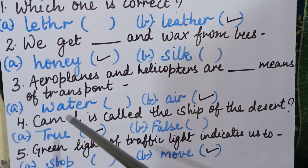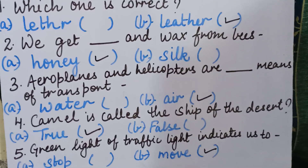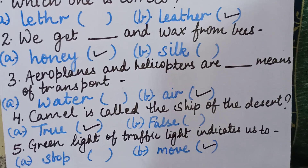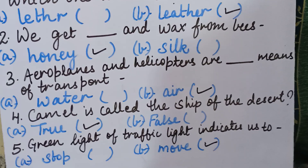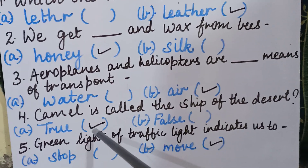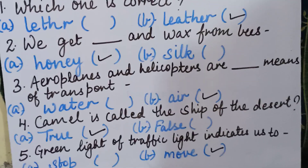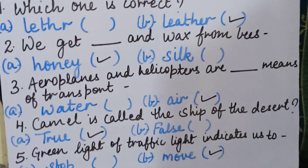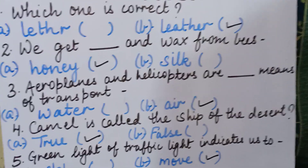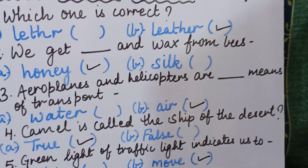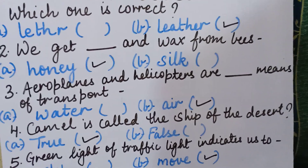Fourth question: camel is called the ship of the desert — true or false? The correct answer is true, because camel is the only animal which can survive in the atmosphere of deserts. We will put a tick in front of true.